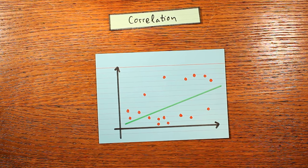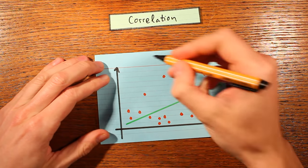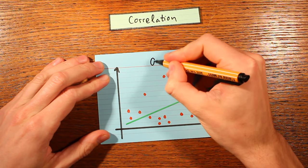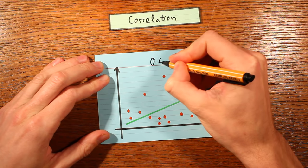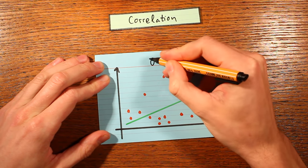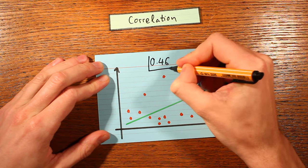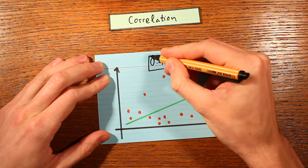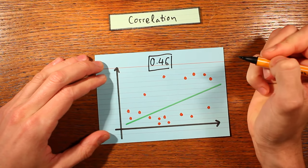The correlation coefficient is a really popular way of summarizing a scatterplot into one single number between minus one and one. In this video I'll show you three formula-free steps for how that's done.